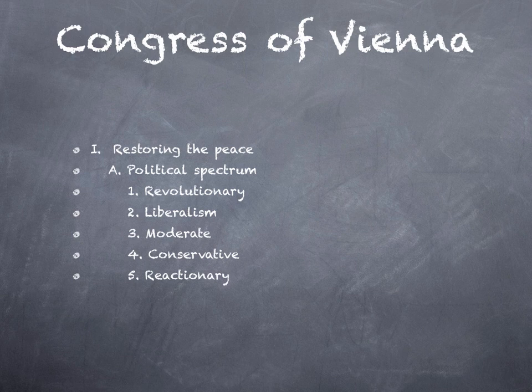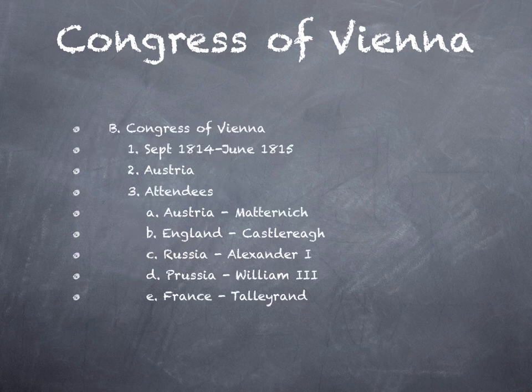Out of that spectrum, people came to the Congress of Vienna. The Congress of Vienna takes place September 1814 through June of 1815, and it includes people from all over Europe. Vienna, being the capital of Austria, is where it takes place. All the major players are there: Austria, England, Russia, Prussia, and even France, even after the defeat of Napoleon.